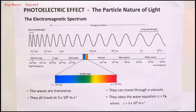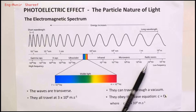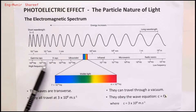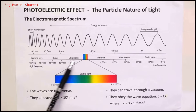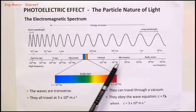Before we can study the photoelectric effect, we need to look at the electromagnetic spectrum. There are some facts that you really need to know very well. The electromagnetic spectrum is made up of seven parts, from gamma rays right down to radio waves. The highest frequency electromagnetic waves are the gamma rays, going from gamma rays to X-rays, then ultraviolet, then a small section of visible light.